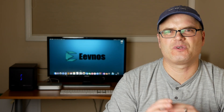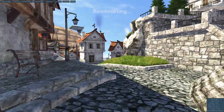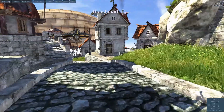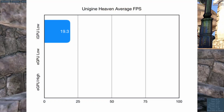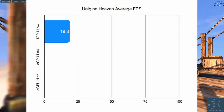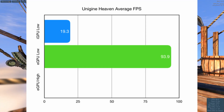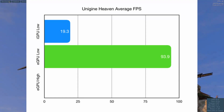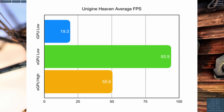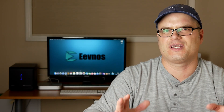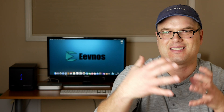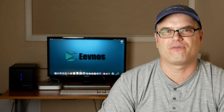The next graphic test I did was Unigine Heaven, and I started on the low setting. I only tested the integrated GPU on low because anything higher was pointless — on that low setting we got an average frame rate of 19 frames per second. Switching over to the external GPU on low, we got an average of 93.9 frames per second. I bumped it up to the high setting and we were still getting an average of 50.6 frames per second — a massive increase, even though this is only Thunderbolt 2.